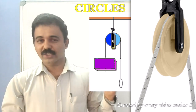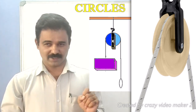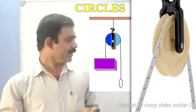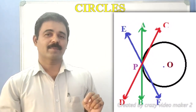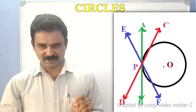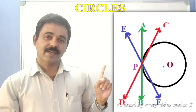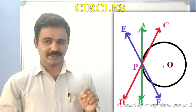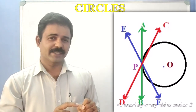The tangent to the circle — if you look at the circle, the tangent to the circle, the main point is the tangent to the circle. Here is the intersecting point of contact. Here is the figure.